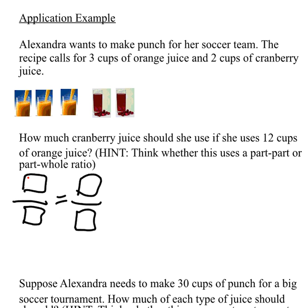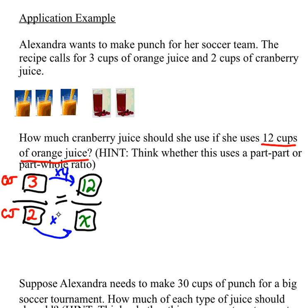So we would say 3 cups orange juice over 2 cups cranberry juice. Remember, orange juice is on top and cranberry juice is on the bottom. So where are we going to put the 12 cups of orange juice? That's going to go on top, and we're going to put x on the bottom. Then we can look at the numbers and notice that 3 times 4 will give me 12, so 2 times 4 will give me 8. You would need 8 cups of cranberry juice.